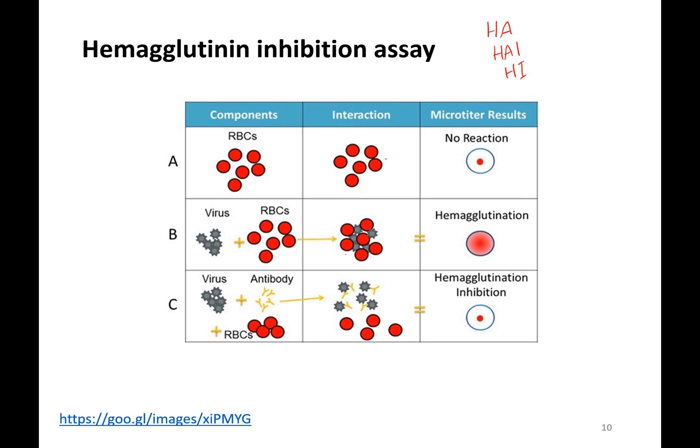Red blood cells alone don't do anything, so when you have them in this little well — a bunch of red blood cells — they'll eventually settle down to the bottom. You see this little dot of red blood cells at the bottom of the well, a little container, and that symbolizes no reaction. Agglutination means clumping up, and 'heme' refers to red blood cells — that's how hemagglutinin got its name.